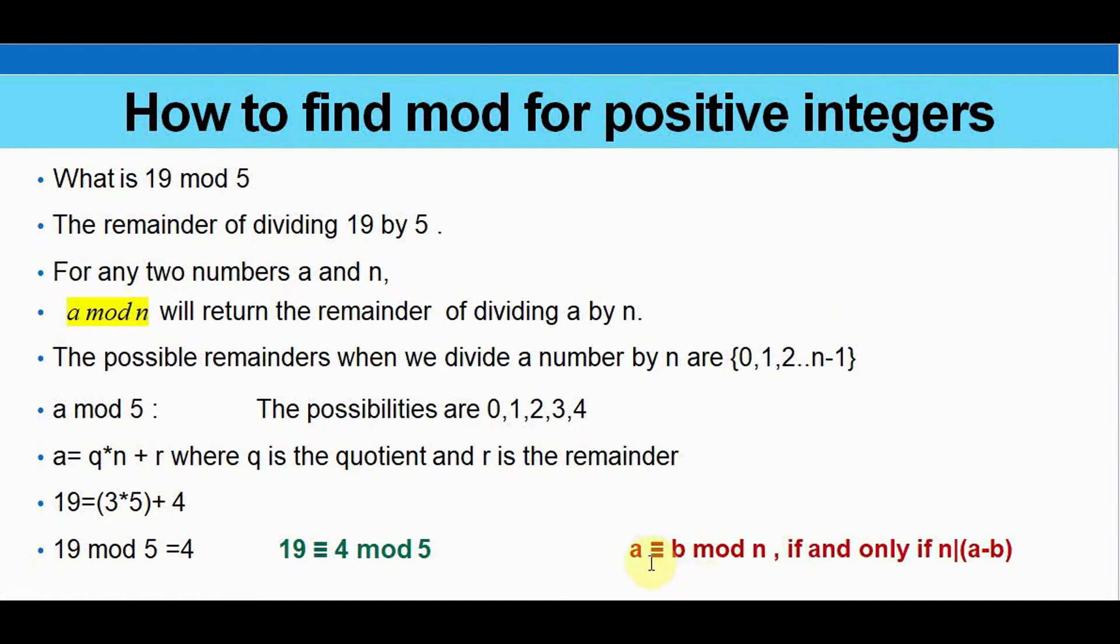So we call a is congruent to b mod n if and only if n divides a minus b. So this symbol means that it's perfect division, doesn't give any remainder. So n in this case is 5, a minus b 19 minus 4, we get 15. So obviously 5 divides 15 perfectly.